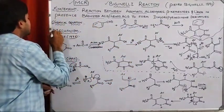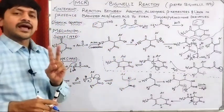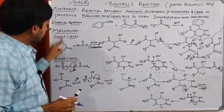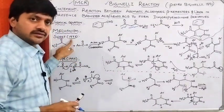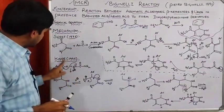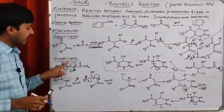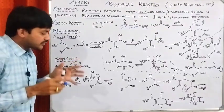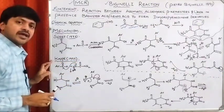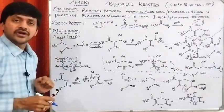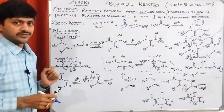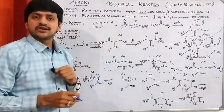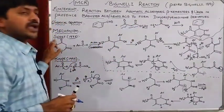In the mechanism, we have two approaches: one approach given by Sweet in 1973 and the approach given by Kappe in 1997. Nowadays we follow the Kappe mechanism for the synthesis of dihydropyrimidinone derivatives. Let's see them one by one. According to the Sweet mechanism, the beta-ketoester and the aromatic aldehyde — these two react initially together.